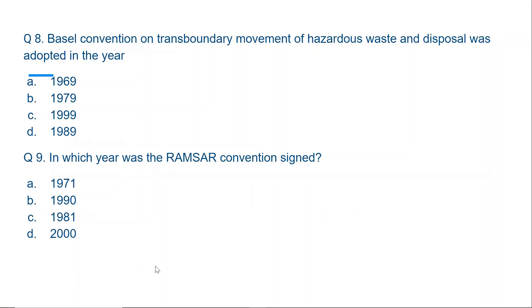Question number eight: The Basel Convention on transboundary movement of hazardous waste and disposal was adopted in which year? Very easy — the answer is 1989. The Basel Convention was signed in 1989 but came into effect in 1992.